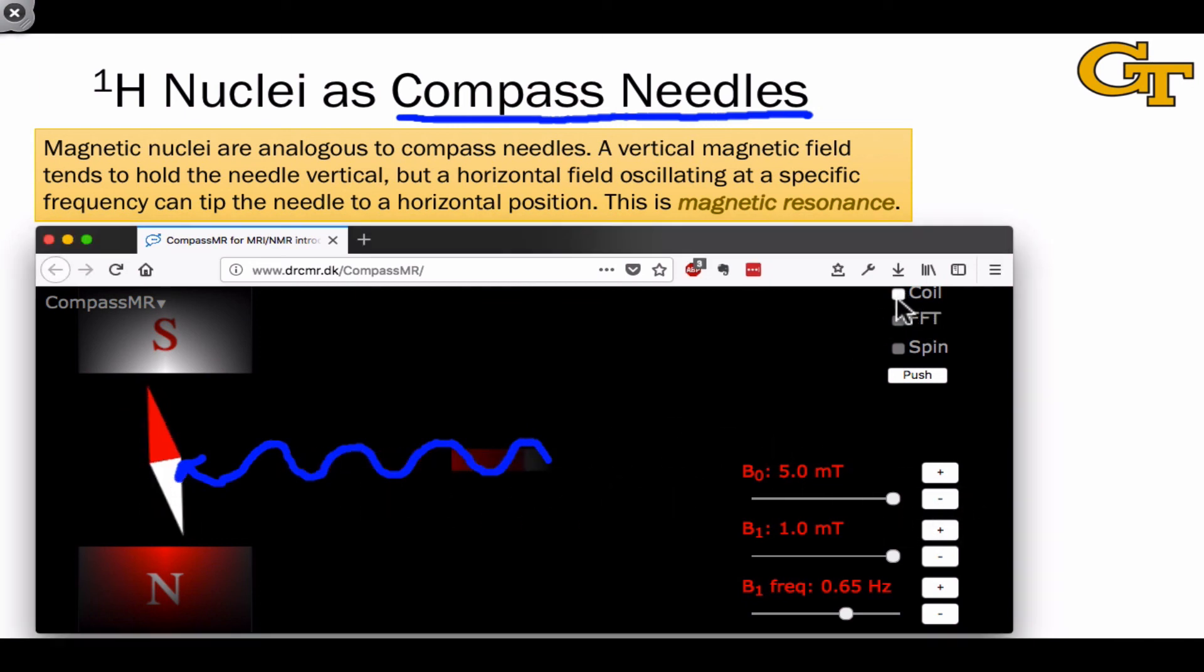And as soon as we turn off this magnetic field at right angles, which is called B1 in the NMR literature in this simulation, we can measure the signal given off. And this looks exactly like that signal we just saw in the simulation. It's an oscillating sine wave that decays over time as the compass needle, or as the hydrogen nucleus, as the case may be, returns to equilibrium.